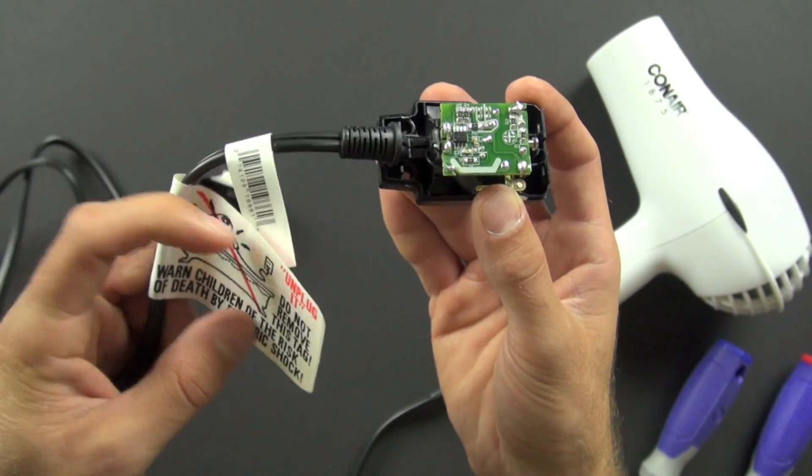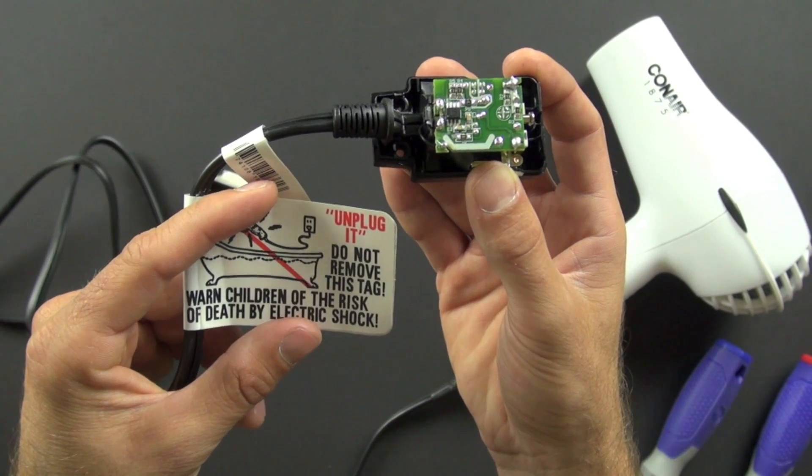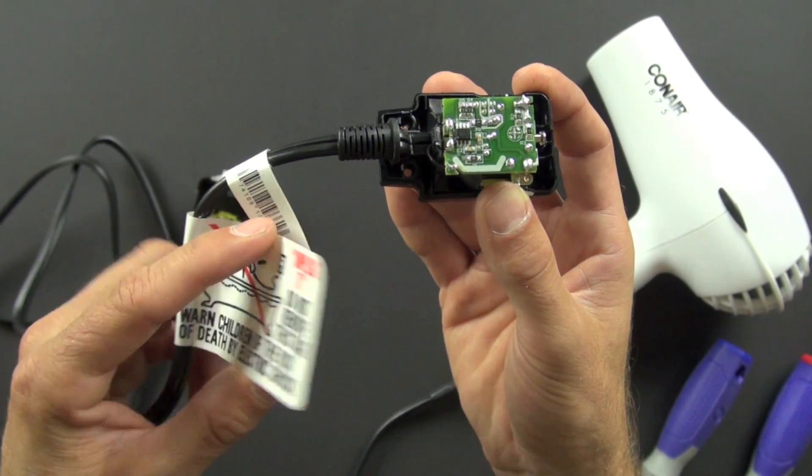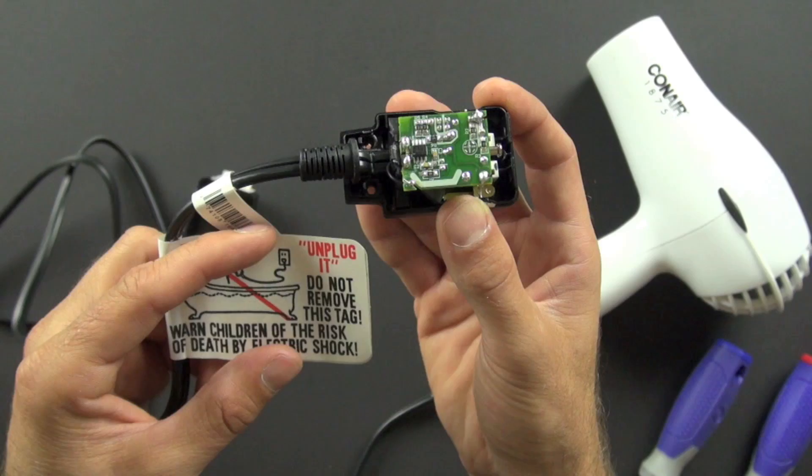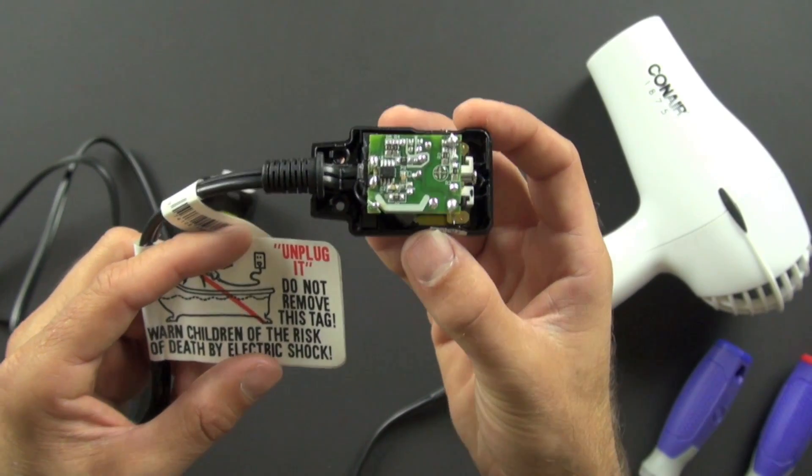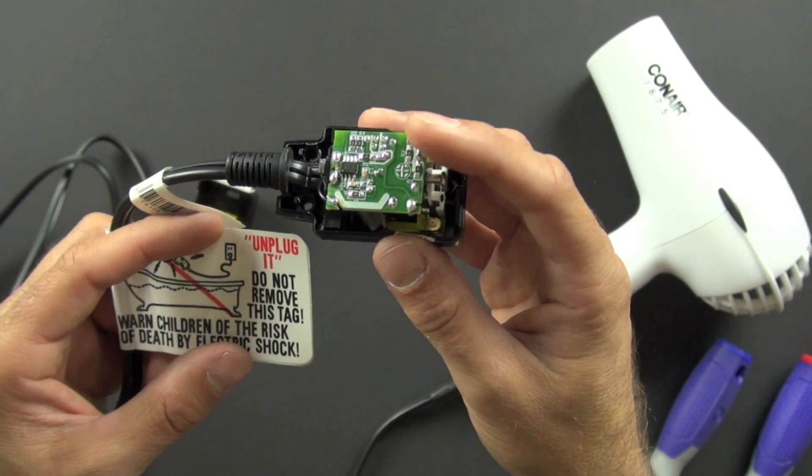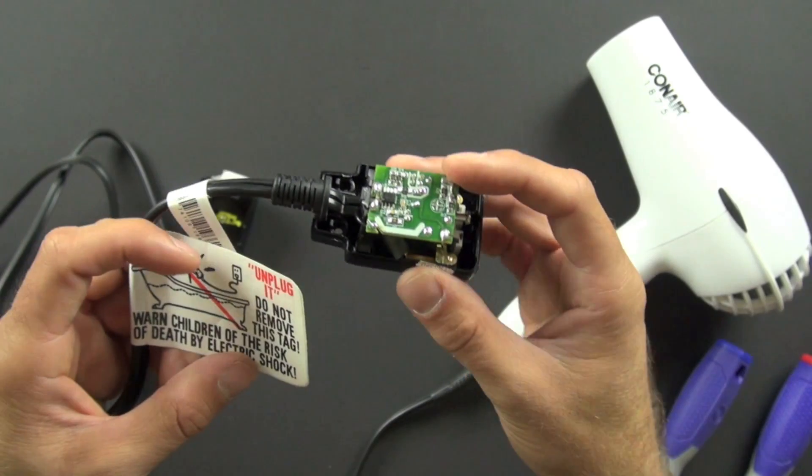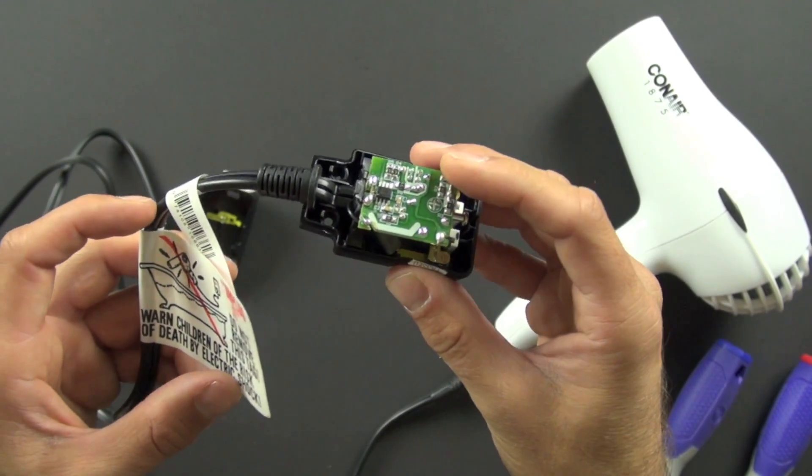And if you look right here, here's a warning. It says, unplug it, do not remove this tag. They still want to warn you that it's definitely not safe to drop a hairdryer into water. And this is a safety precaution, but it's not a good idea to ever put the hairdryer near water because it is an electrical device with open contacts on the inside.